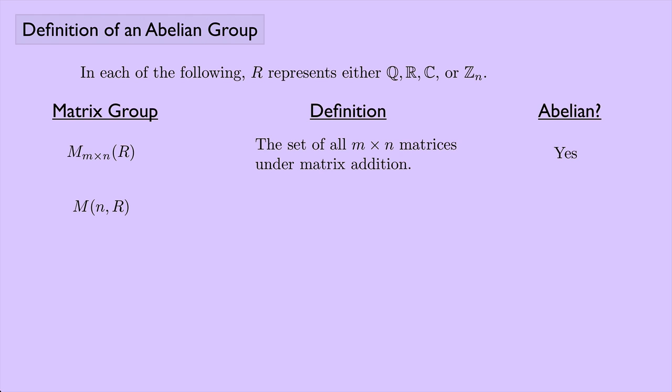Next is M(n, R) — the set of all n×n matrices under matrix addition. All I did was restrict to square matrices. This is also abelian — it's just a special case of the set above.